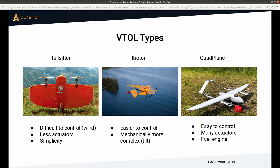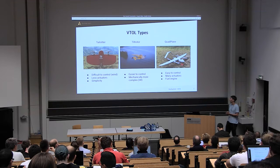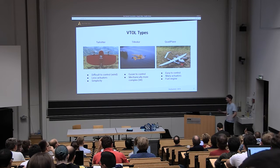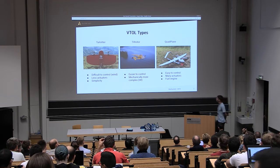We also support tilt rotors — you can see an example in the middle. Those are generally easier to control, I would say, though they are mechanically more complex because they tilt the motors to achieve the transition to forward flight. That can also be challenging, as we'll see later. We actually change the mixer geometry and can get coupling effects during the transition, so there is some handling we need to do there.